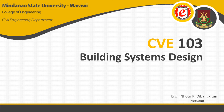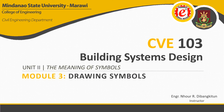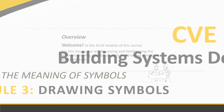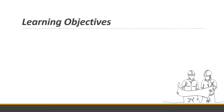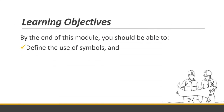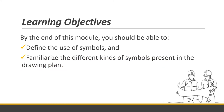CV 1 or 3 Building Systems Design, Unit 2, The Meaning of Symbols, Module 3: Drawing Symbols. Welcome to the third module of this course. For this lesson, we will be discussing and familiarizing the different drawing symbols present in a drawing plan, their types or groups, and their uses. By the end of this module, you should be able to define the use of symbols and familiarize the different kinds of symbols present in the drawing plan.